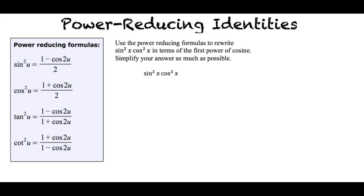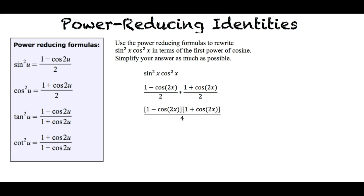Using the power reducing formula for sine squared u and cosine squared u with u equals x, we get 1 minus cosine 2x all over 2 times 1 plus cosine 2x all over 2. Then we can simplify the expression. First we multiply the two fractions and we get 1 minus cosine 2x times 1 plus cosine 2x all over 4.